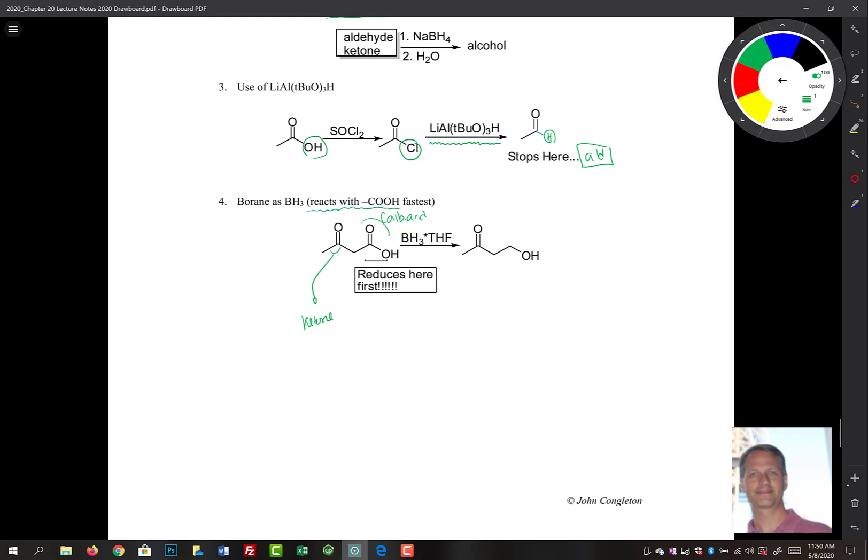If we put in here one equivalent of BH3THF, then you end up selectively only reducing the carboxylic acid. In essence, what we're left with is this—it leaves our ketone functional group there, but it takes our carboxylic acid to an alcohol.